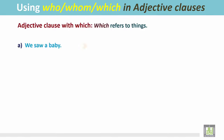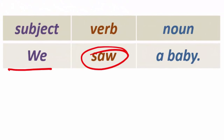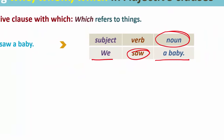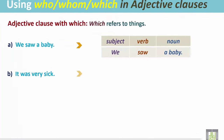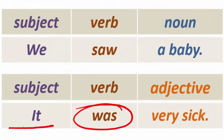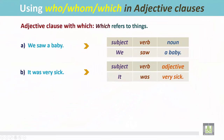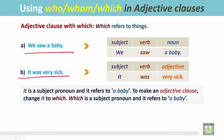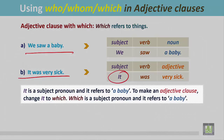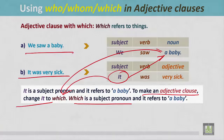Another example: 'We saw a baby.' 'We' is the subject, 'saw' is the verb, and 'a baby' is the noun. 'It was very sick.' 'It' is the subject followed by the be-verb 'was,' and the adjective is 'very sick.' In these two sentences, 'it' refers to 'a baby.' To make an adjective clause, change 'it' to 'which.' 'Which' is a subject pronoun and it refers to 'a baby.'